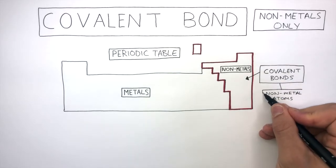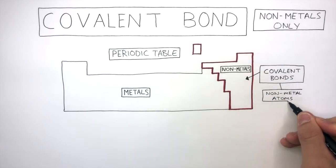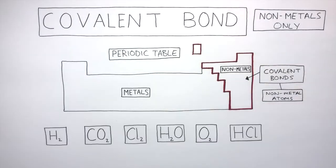If you ever see a substance with a metal atom in it, covalent bonding is not taking place. Pause the video now to use your periodic table to identify what type of bonding takes place in these substances.